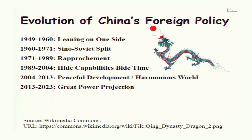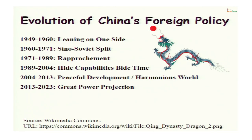China's foreign policy has evolved over time. When I say China here, I mean the People's Republic of China, China ruled by the Communist Party. Looking at the evolution of its foreign policy, we can find different stages. I have divided it into six stages for the purpose of these lectures. The first stage is from 1949 to 1960, from the foundation of the People's Republic of China to the rift between the Soviet Union and the People's Republic. This period has been named 'leaning on one side.'